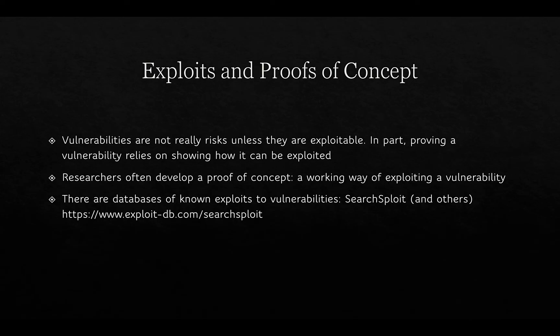Vulnerabilities are not really risks until they are exploitable. Proving a vulnerability often relies on showing how it can be exploited, so researchers develop proofs of concept — essentially a working exploit. There is a strong argument to disclose those proofs of concept, but as soon as they are released, it makes it easy for other attackers to use them. Sometimes researchers are convinced not to release a proof of concept because it's simply too dangerous.